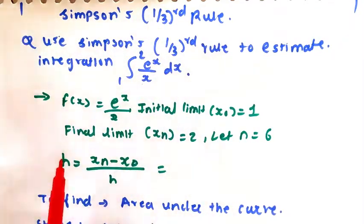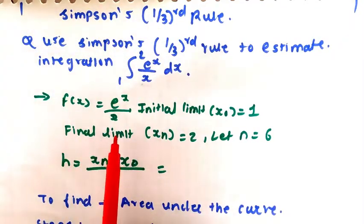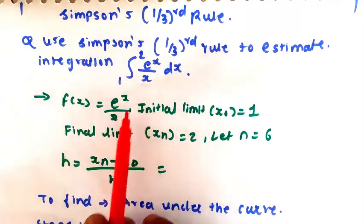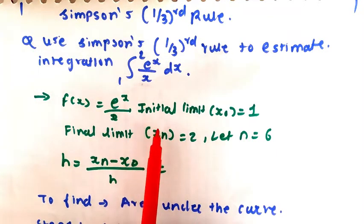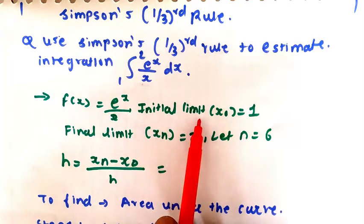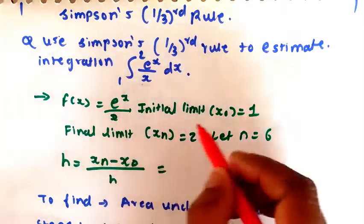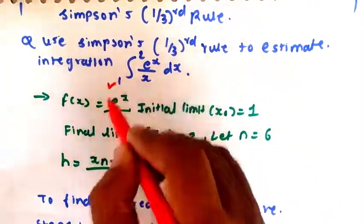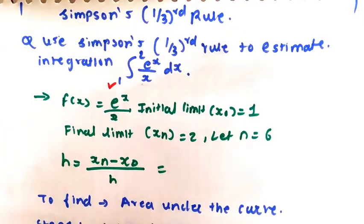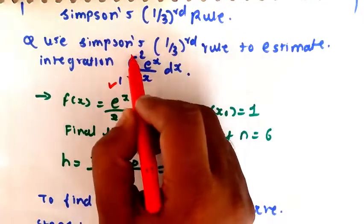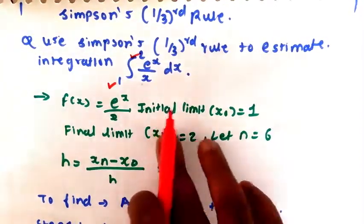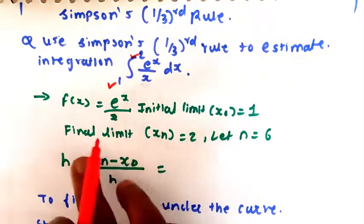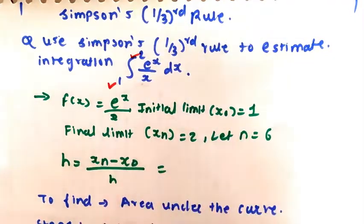In the solution, the function is given as e raised to x upon x. The initial limit is x0, which is 1, and the final limit xn is 2.